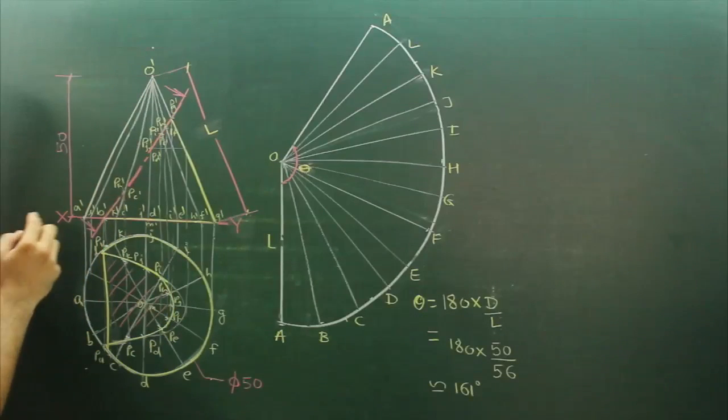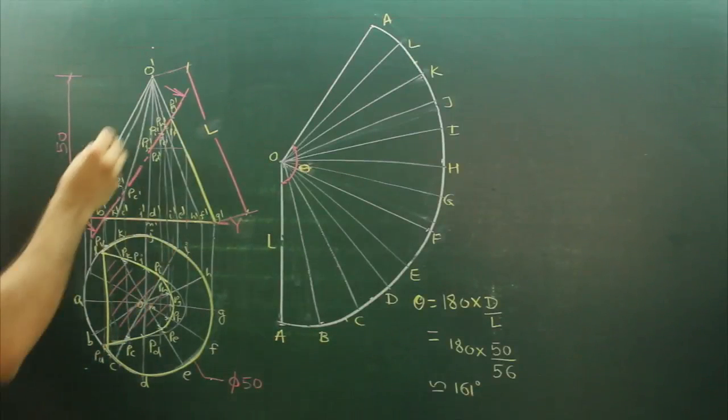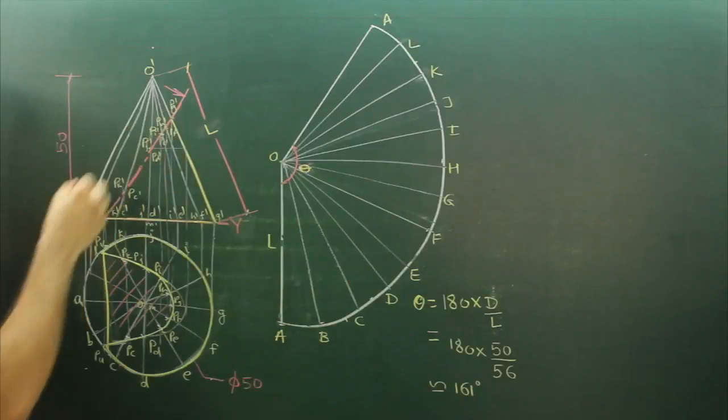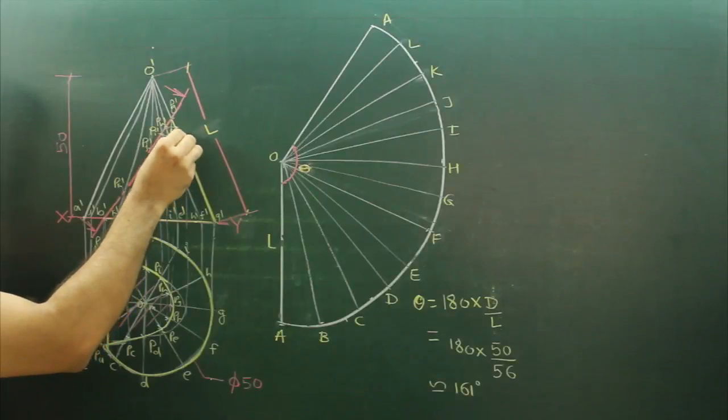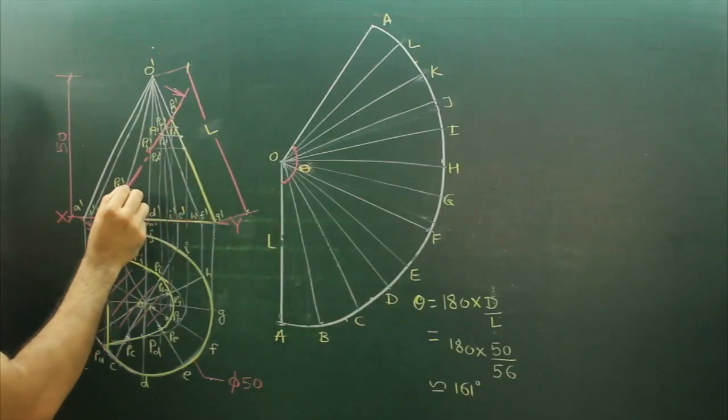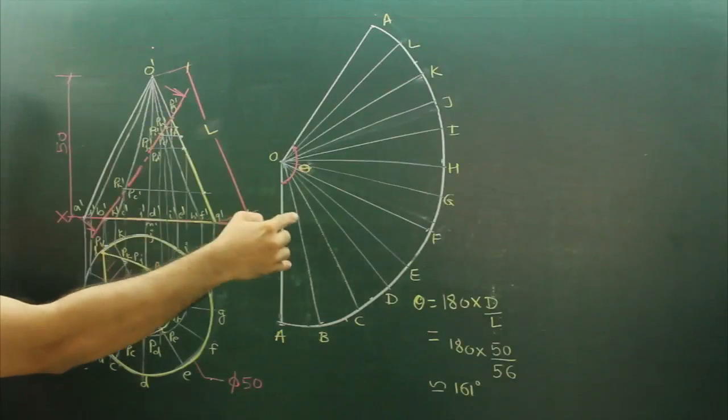So after dividing that, after making out cutting plane, now we will take all the cut points on the slant length. So if you see, PG' is already on the slant length. We need to take PH', PF', PE', PI', PJ', PD', TK', PC'. Now take all these points on this slant length.